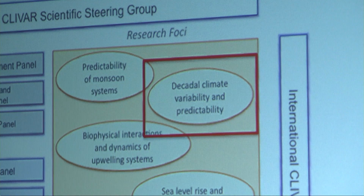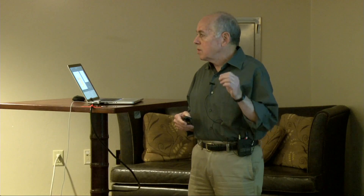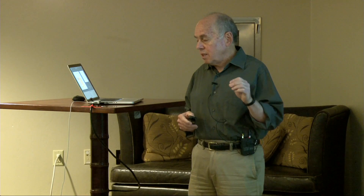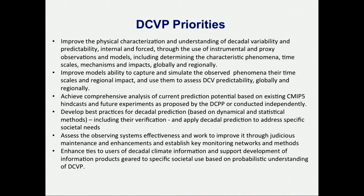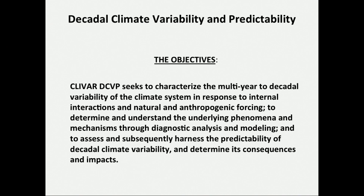What they wanted from these cross-cutting activities is to define specific problems that the cross-cutting activities will deal with in the near future — something like three or five years — activities that are interesting to the entire community, ready to be addressed, and where we can achieve some progress over a time span of three to five years. There was a discussion in the Hague, and we came out with two major activities within DCVP.